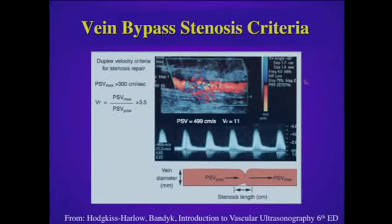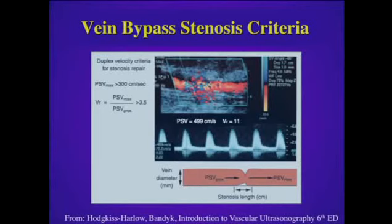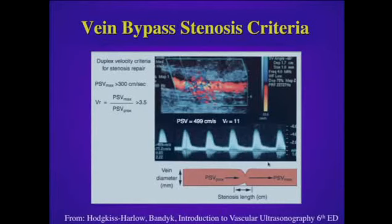Let me discuss some of the criteria we can use following intervention. Criteria published by Dennis Bandyk and his group look at peak systolic velocity and velocity ratios in patients with bypass grafts. Typically, we will follow patients after bypass to look for evidence of recurrent stenosis. Dr. Bandyk proposes that a peak systolic velocity in the stenosis greater than 300 centimeters per second likely warrants intervention, and suggests a velocity ratio of greater than 3.5 for indicating significant disease — utilizing this ratio similarly to how we detect native peripheral artery stenosis.